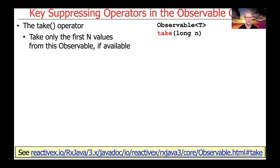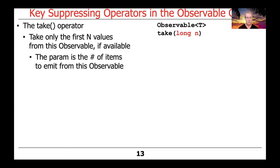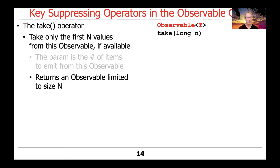Let's now turn our attention to the take operator. This suppressing operator will take only the first n values from the observable, if they're available. The parameter n indicates the number of items that we want to have emitted from this observable. It returns an observable that's limited to the number n, or less if there are not that many items.